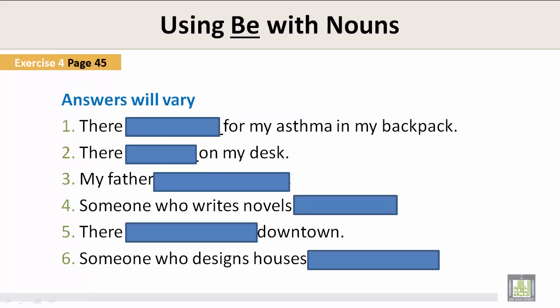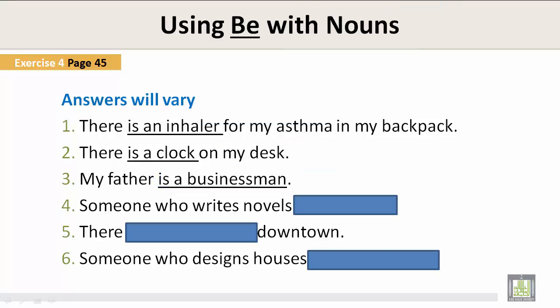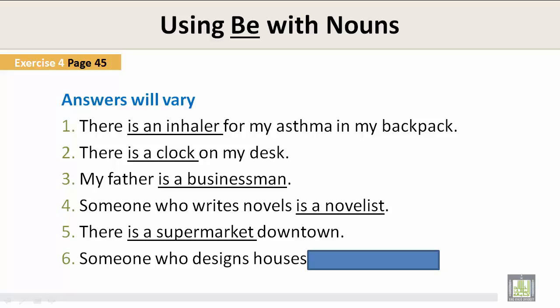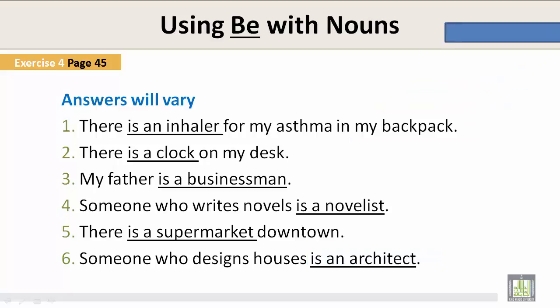Exercise 4, page 45: Using the verb be with nouns. Answers will vary. Number one: there is an inhaler for my asthma in my backpack. Number two: there is a clock on my desk. Number three: my father is a businessman. Number four: someone who writes novels is a novelist. Number five: there is a supermarket downtown. Number six: someone who designs houses is an architect.